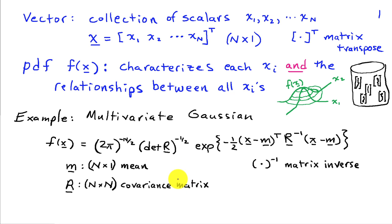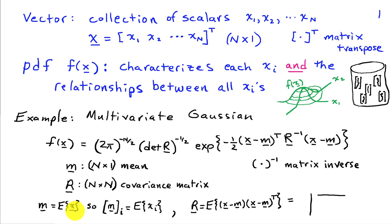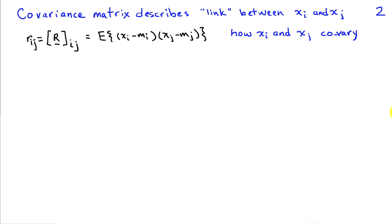Oftentimes, just looking at the mean and the covariance matrix are sufficient. In the Gaussian case, the mean and covariance matrix completely define the density, but if we have data that's not multivariate Gaussian, we can use the mean and covariance matrix to characterize it in a partial way. The mean is the expected value of the vector x, so the i-th element of the mean is the expected value of x sub i. The covariance matrix is defined as the expectation of (x minus the mean) times (x minus the mean) transpose, giving an n-by-n matrix. We'll use lowercase r sub ij as shorthand for the ij-th element of matrix R.